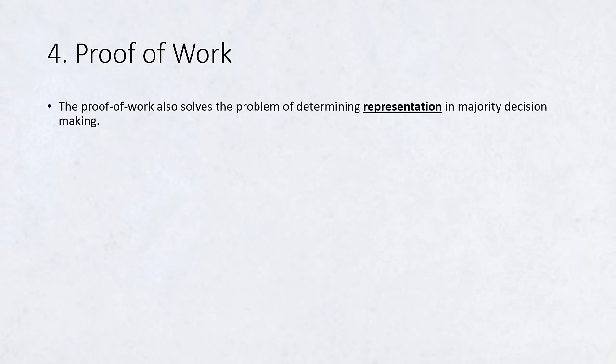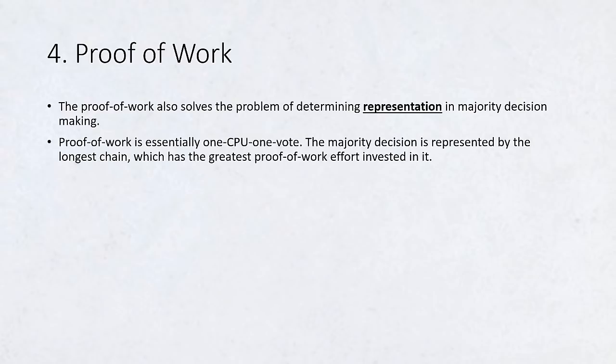The proof-of-work also solves the problem of determining representation in majority decision-making. If the majority were based on one IP address, one vote, it could be subverted by anyone able to allocate many IPs. Proof-of-work is essentially one CPU, one vote. The majority decision is represented by the longest chain, which has the greatest proof-of-work effort invested in it.